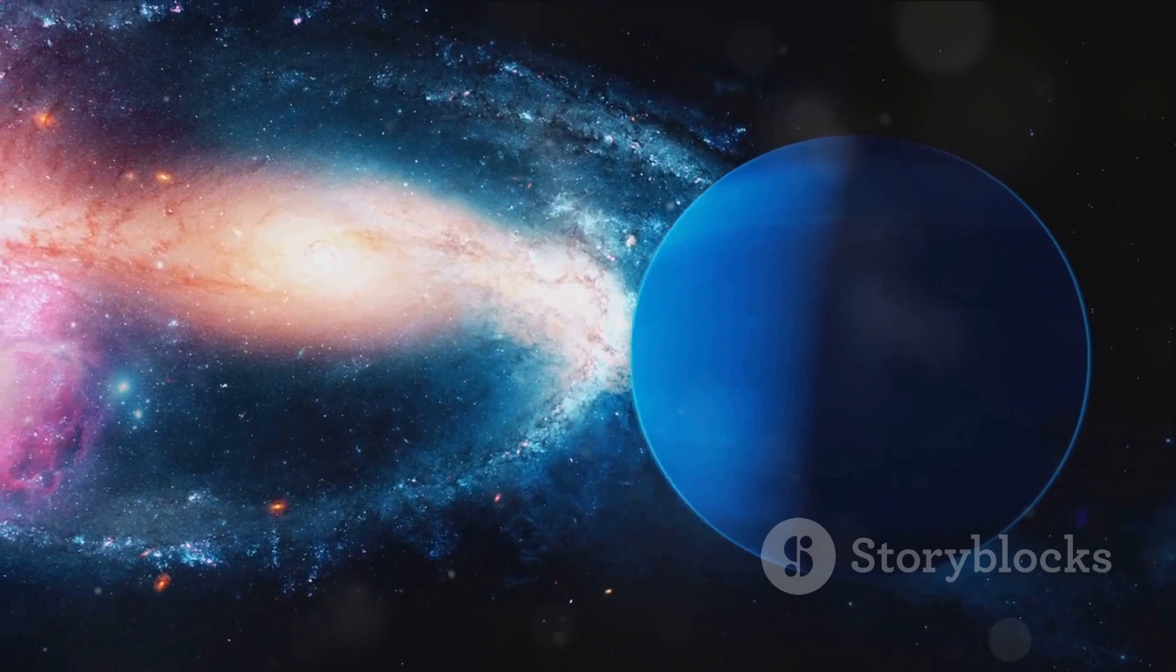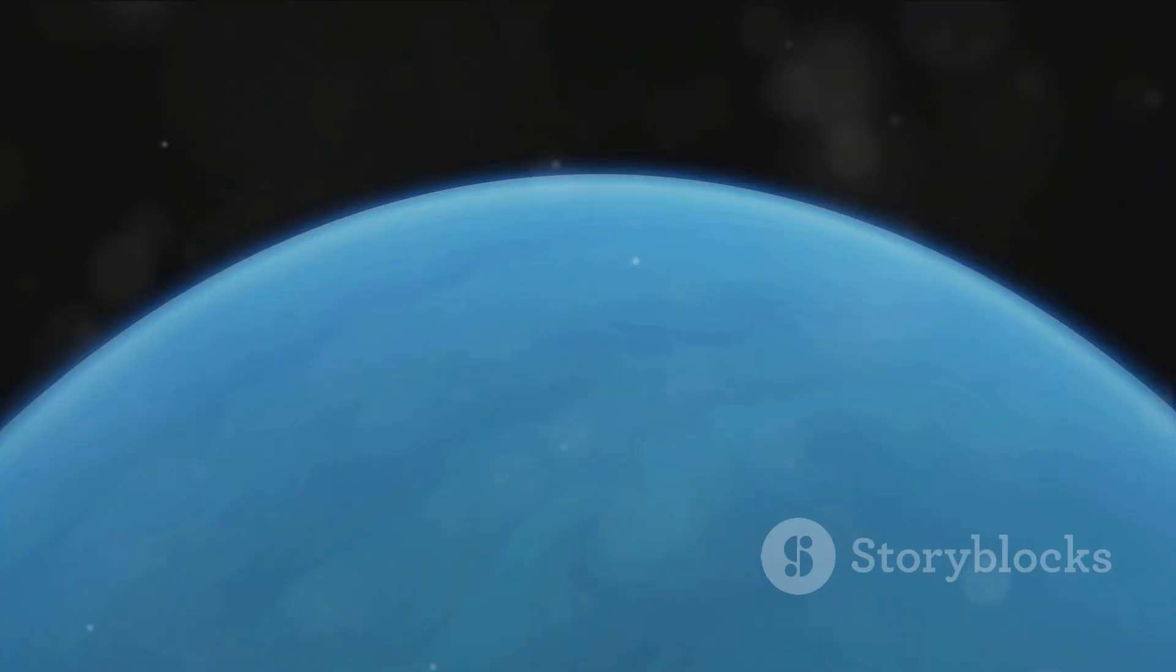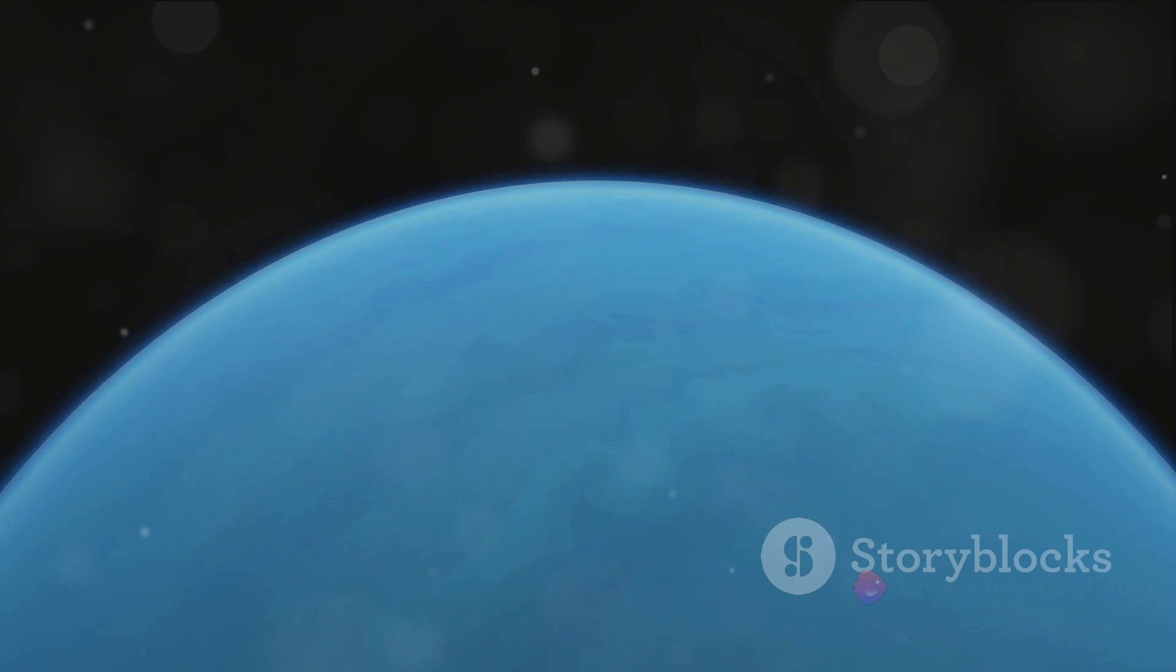Now, let's talk about the size of this gargantuan planet. Neptune is about four times the diameter of Earth. To put it in perspective, you could fit 57 Earths inside Neptune. That's right, 57.